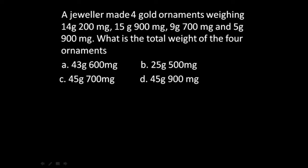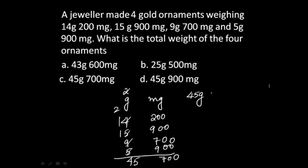Next question: A jeweler made four gold ornaments weighing 14g 200mg, 15g 900mg, 9g 700mg, and 5g 900mg. What is the total weight of the four ornaments? Adding all these weights together gives 45 grams and 700 milligrams.